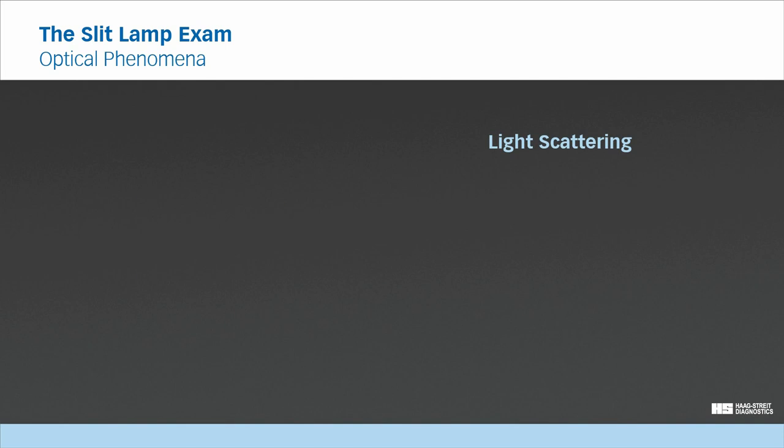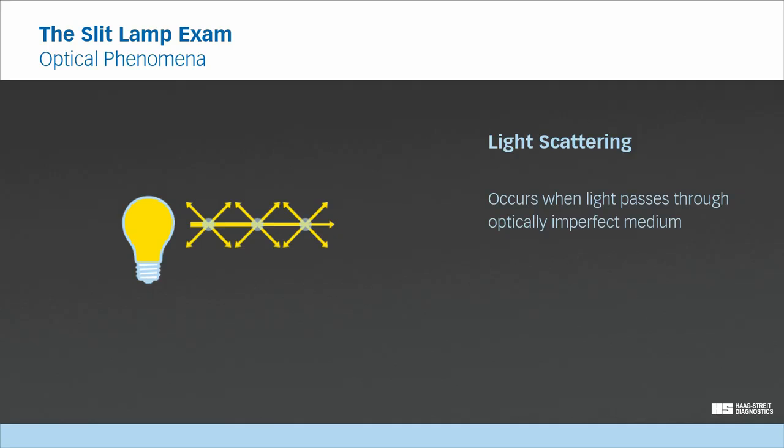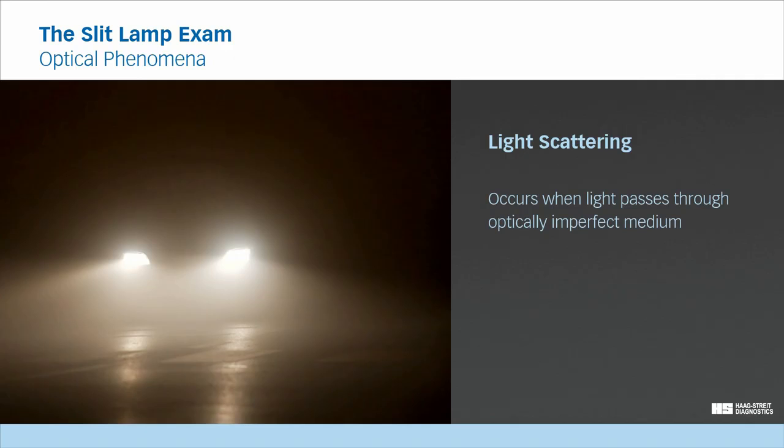Light scattering occurs when light passes through an optically imperfect medium and is deflected from a straight path. This can be observed when a car turns on its headlights in dense fog. The water drops in the air are illuminated by the headlights and scatter the light.